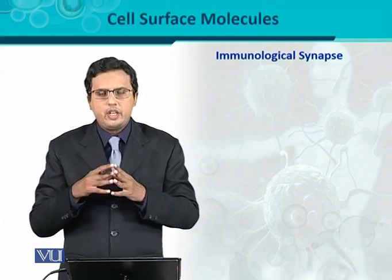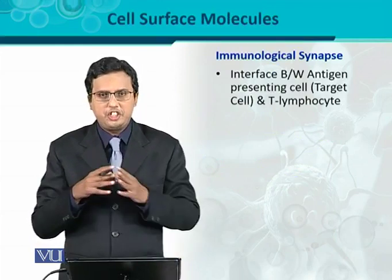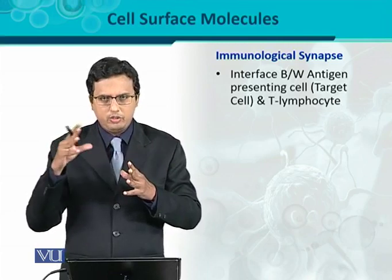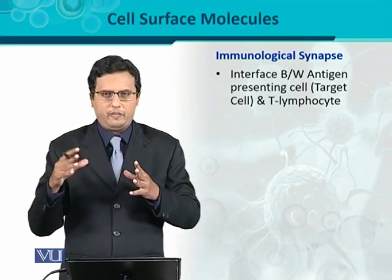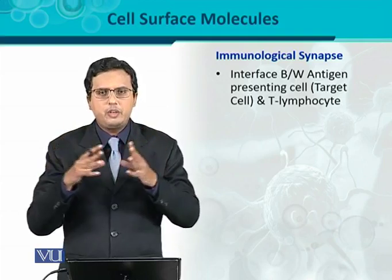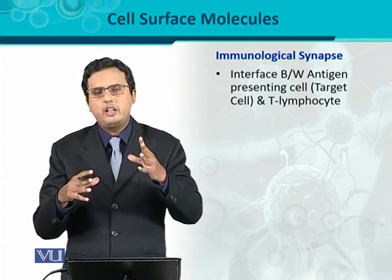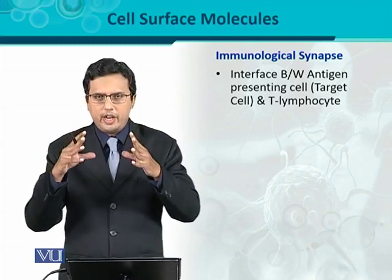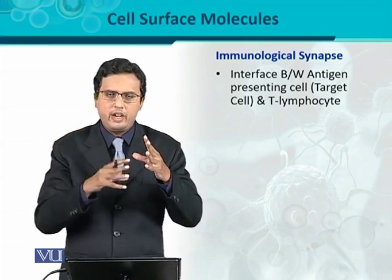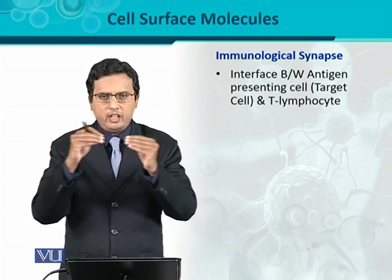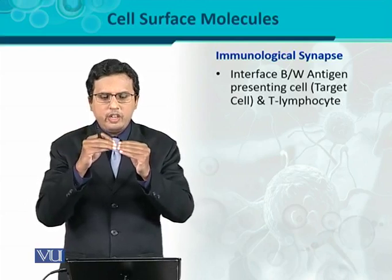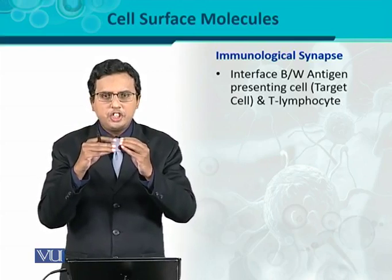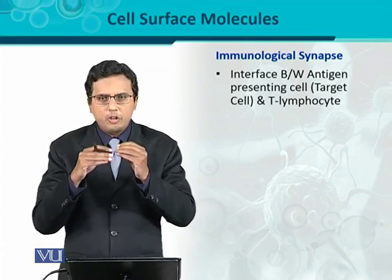Now, immunological synapse. The immunological synapse is basically a junction, or interface, between an antigen-presenting cell — which is the target cell, because it is presenting the antigen — and the T-lymphocyte. So in cell-to-cell interaction, the T-lymphocyte is the responding cell, and the antigen-presenting cell is the target cell. These two cells interact together, and during that interaction a junction or interface is formed, called the immunological synapse.